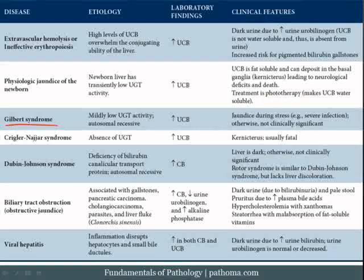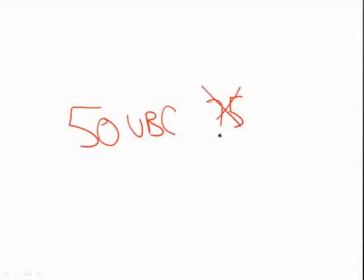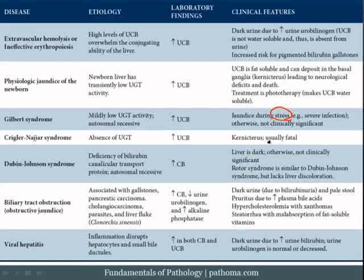The next disorder is Gilbert syndrome. Patients have a genetically low, autosomal recessive, mild decrease in UGT conjugating activity. If the liver can't conjugate fully, there will be an increase in unconjugated bilirubin. Normally, the liver has capacity well above what's produced, so for the most part these patients don't actually have jaundice. However, if a stress arises — for example, severe infection — then the patients could develop jaundice.